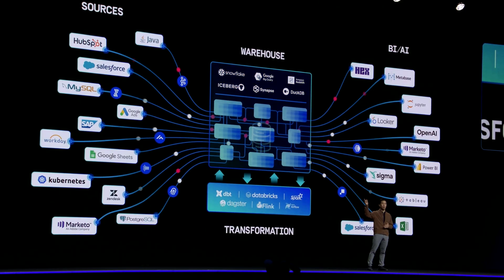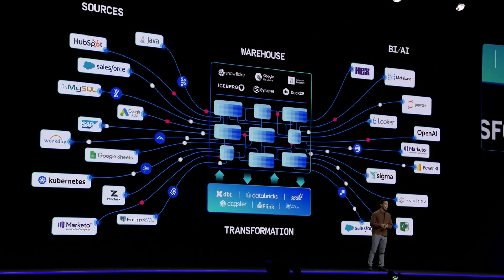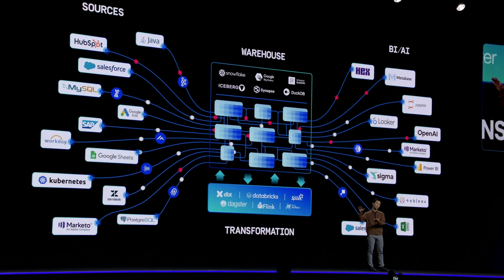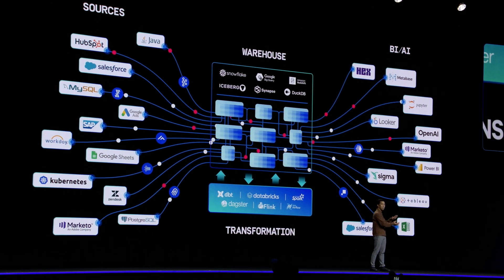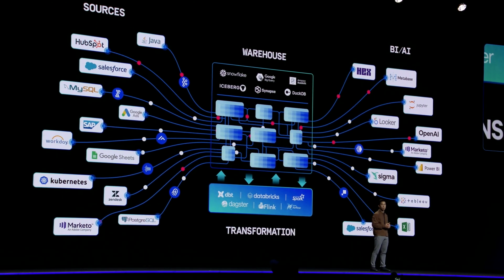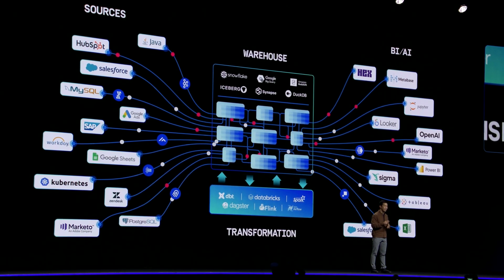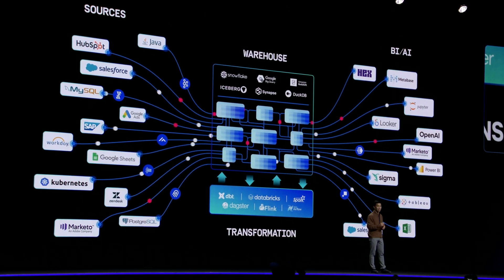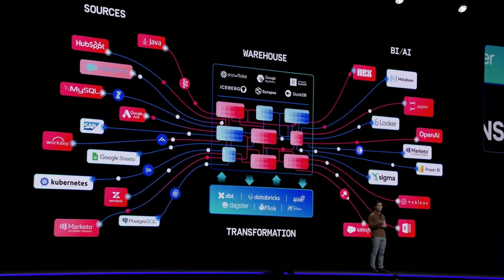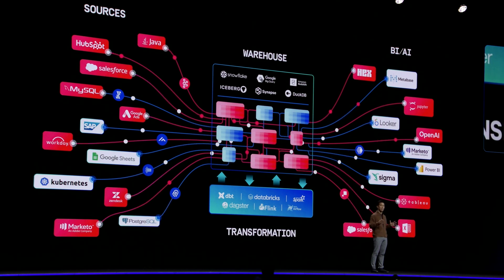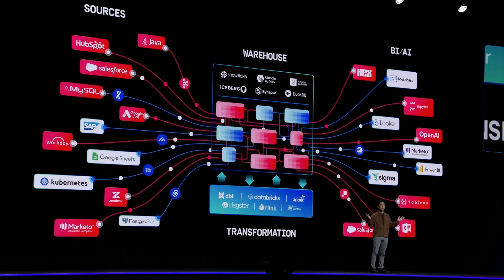This diagram probably looks familiar to you. Data flows from sources through a warehouse to downstream AI and BI tools. Everything looks fine until a customer flags a data issue. You start troubleshooting, but the context is either fragmented, messy, or missing entirely.